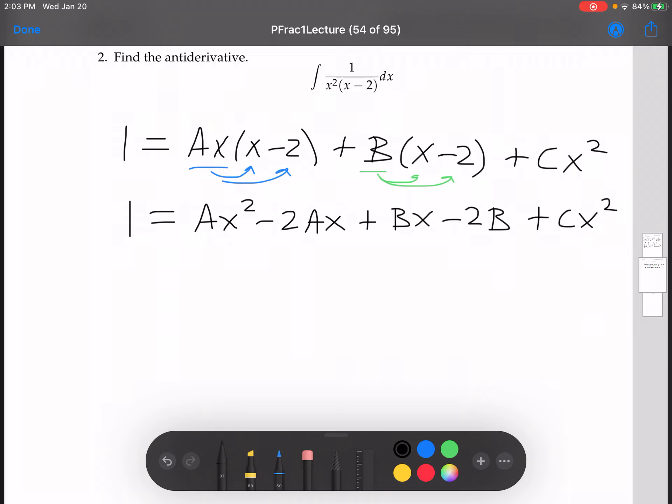And so now I'm going to collect all of the things with x squared together, all the things with x's together, and all the things with no x together. So I have 1 equals Ax squared plus Cx squared. I got those there, right? The two x squared things. Now the two x things, the two things with x's, so we have negative 2Ax plus Bx.